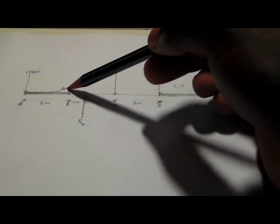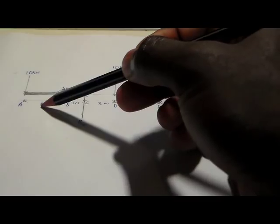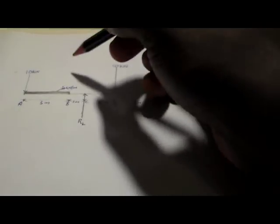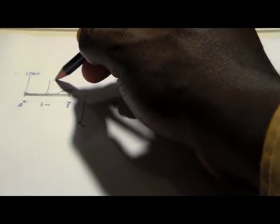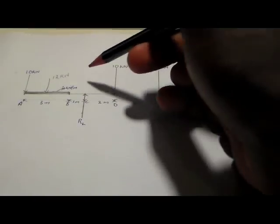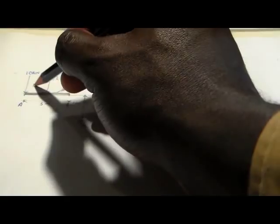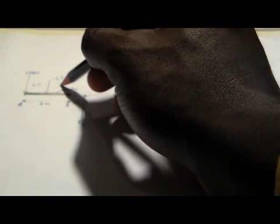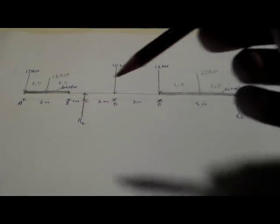For the other distributed load: 4 kilonewtons per meter over 3 meters gives 4 multiplied by 3, which is 12 kilonewtons. This 12 kN acts at the middle of the 3 meters, so that's 1.5 meters from each side.